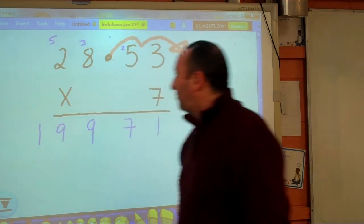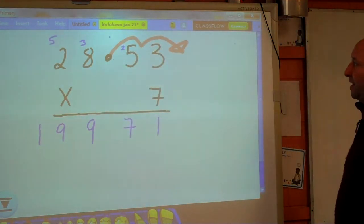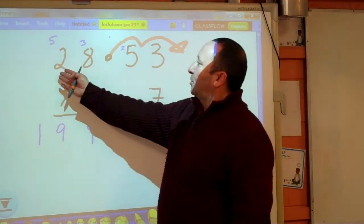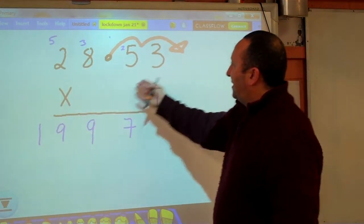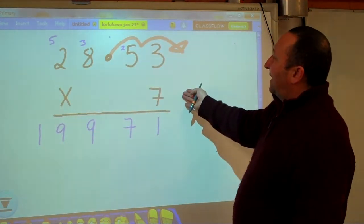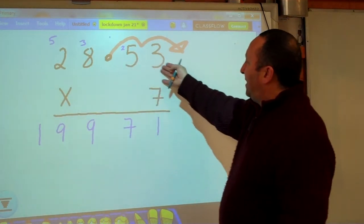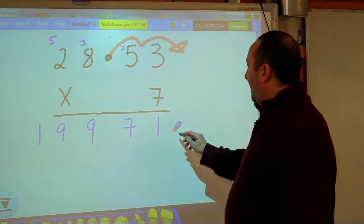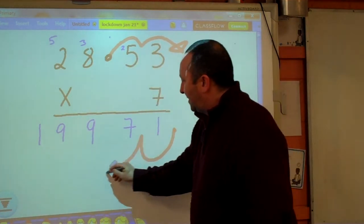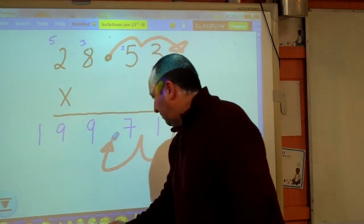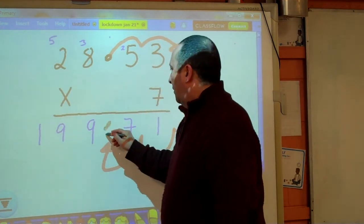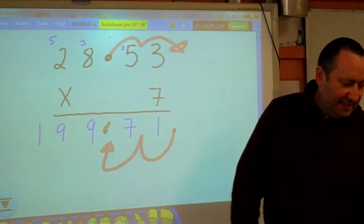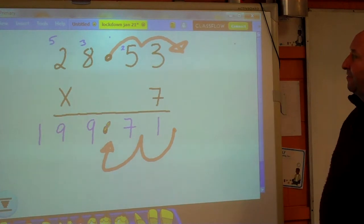Now, those are all the numbers in my answer, but that is not my answer because I pretended that number was 2853 by 7. It's actually 28.53 by 7. So my decimal point is sitting out here because I moved it two places to the right. I've got to move it back in two places, meaning that my decimal point must go there, with my answer being 199.71.